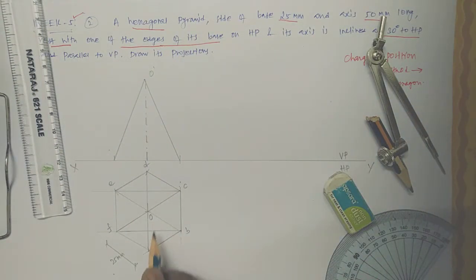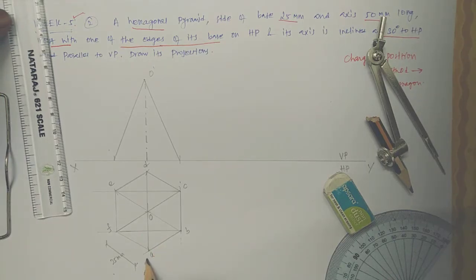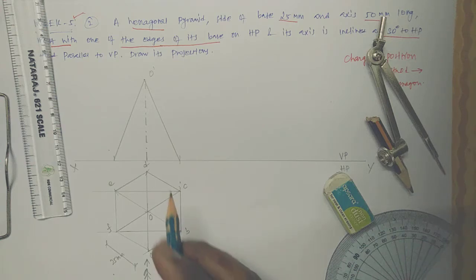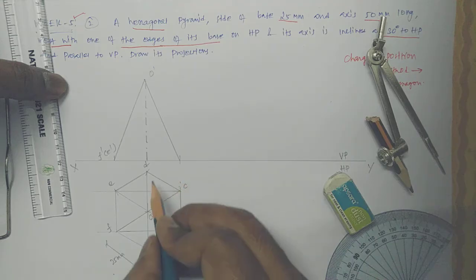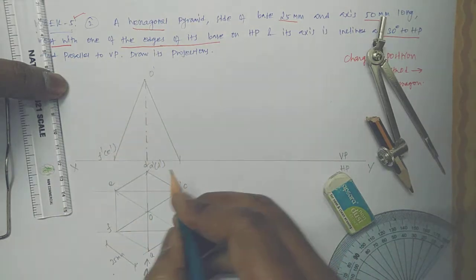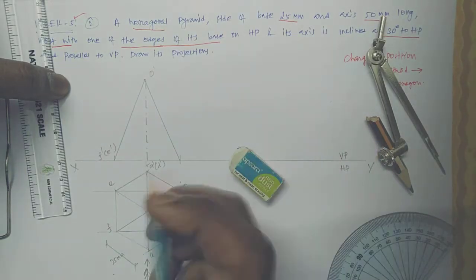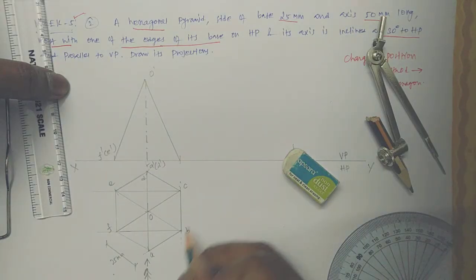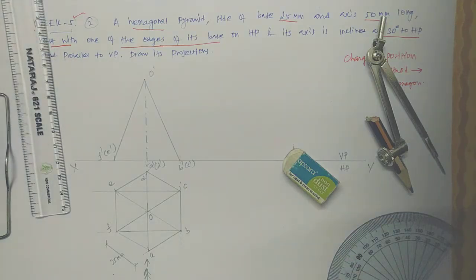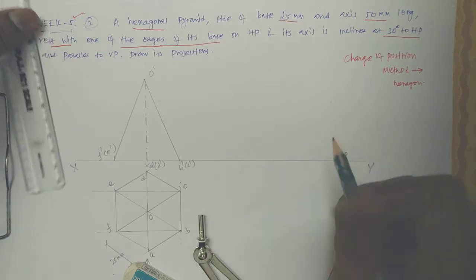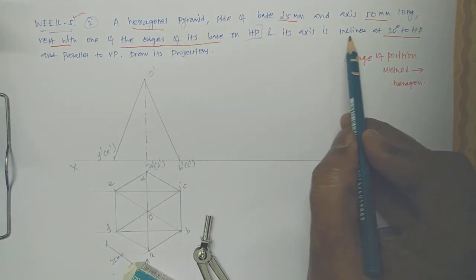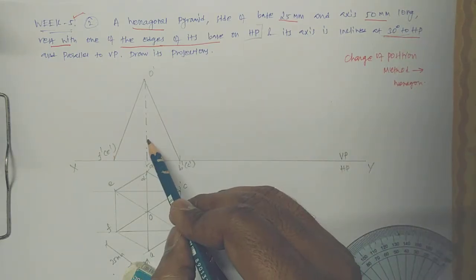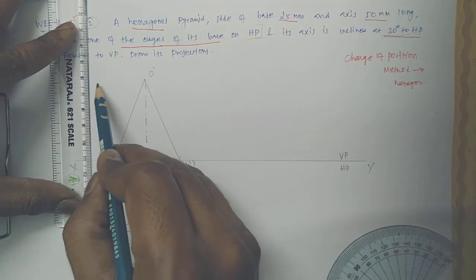When you are seeing from this direction, the hexagonal pyramid looks like this. When you see F, E is behind it — so F-dash and E-dash in brackets. Similarly A-dash and D-dash are on the back side. B-dash and C-dash are in brackets because they are hidden. Now the pyramid is ready. We change the position: the base on HP is finished. Now the axis is inclined at 30 degrees to HP — this axis line is inclined 30 degrees to HP, and the height of the axis is 50mm.